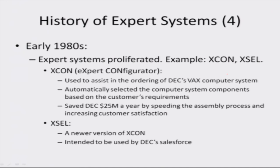In the early 1980s, expert systems proliferated. For example, Xcon and Xsel. Xcon — which stands for Expert Configurator — was used to assist in the ordering of DEC's VAX computer systems. It automatically selected computer system components based on customer requirements and saved DEC $25 million a year by speeding the assembly process and increasing customer satisfaction. Xsel was a newer version of Xcon, intended to be used by DEC's sales force to enable customers to efficiently customize their VAX machines.